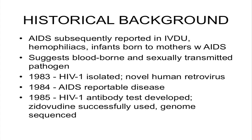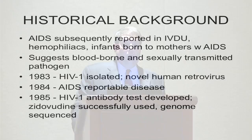In the mid-80s, lots of developments occurred. In 1983, the virus itself was isolated — lots of controversy about who was first to do that. It was found to be a novel human retrovirus. In 1984, AIDS became a reportable disease. And 1985 was quite a banner year: the first test was developed, the first antiviral drug with some efficacy — zidovudine or AZT — was released, and the genome was sequenced. All those developments were very important for understanding HIV infection and for diagnostics.